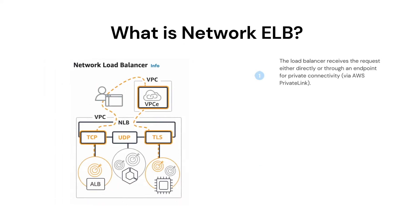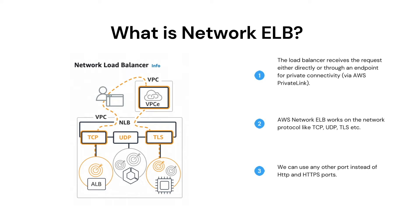Next question: What is Network load balancer? Network load balancer works on the networking protocols like TCP, UDP, and TLS. Here we can route the traffic based on ports instead of application protocols like HTTP and HTTPS. Normally, the load balancer routes the traffic to the target groups, and from the target groups, traffic is routed to the end resources like EC2 instances, containers, IP addresses, and Lambda functions. These listener groups make the Network load balancer different from other load balancers.